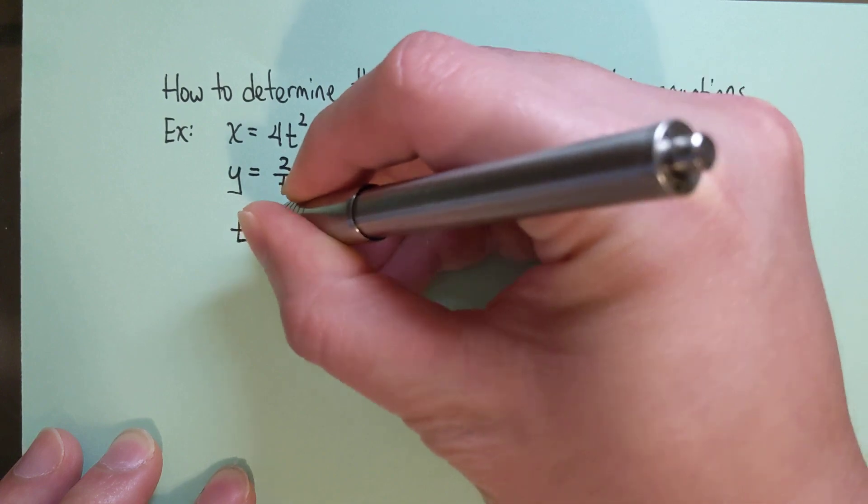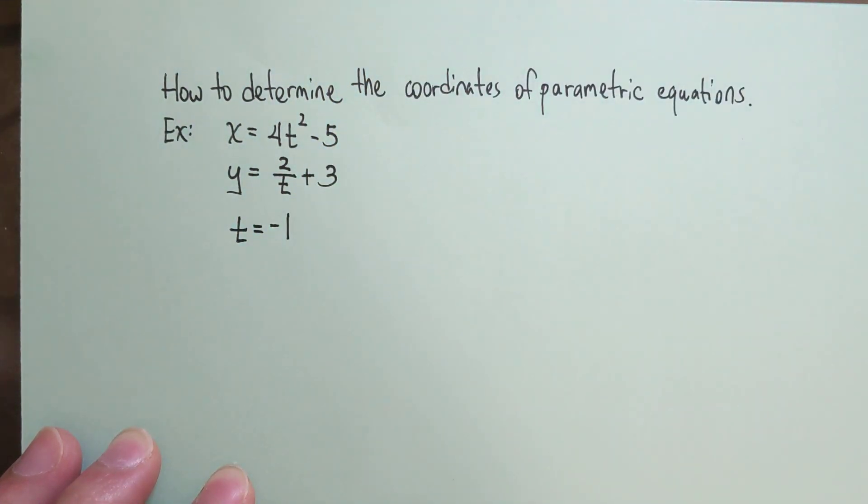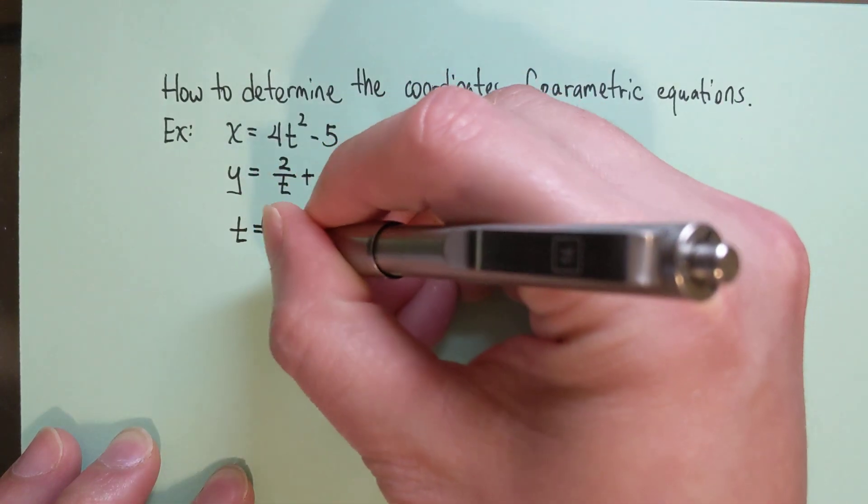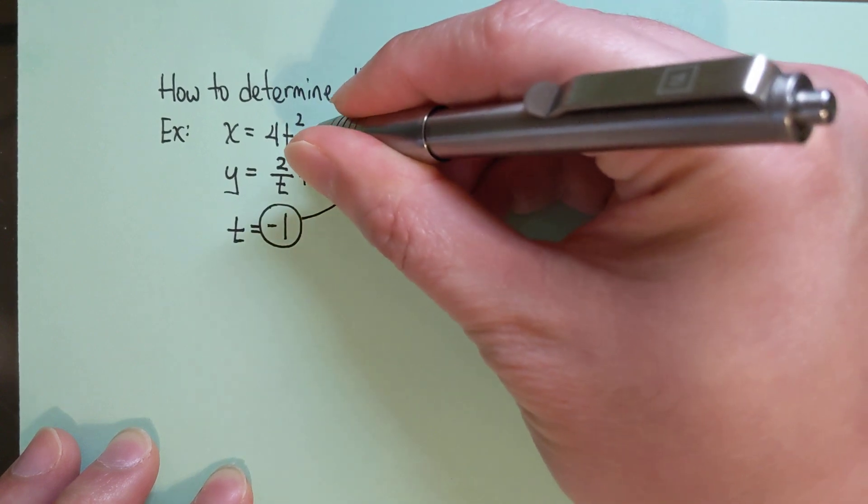For example, if I use t equals negative 1, then I'm going to take this t equals negative 1 and plug it in to t.